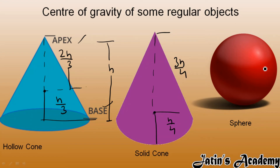Last, we have a sphere. Whether it is a solid sphere or a hollow sphere, the center of gravity is at the center of the body. So these are the centers of gravity for some regular objects.